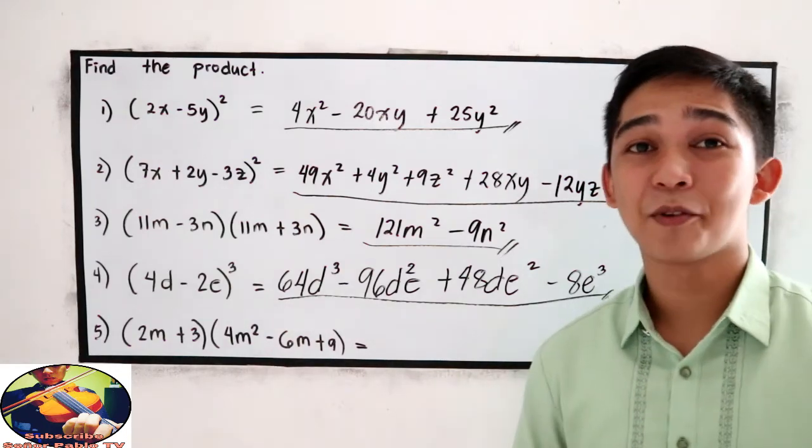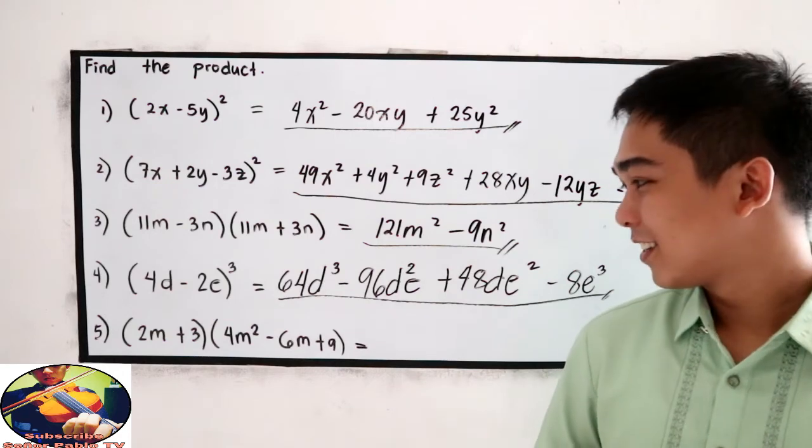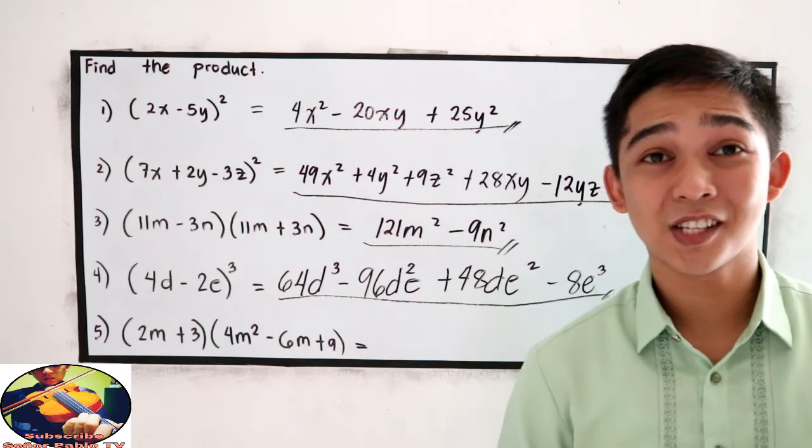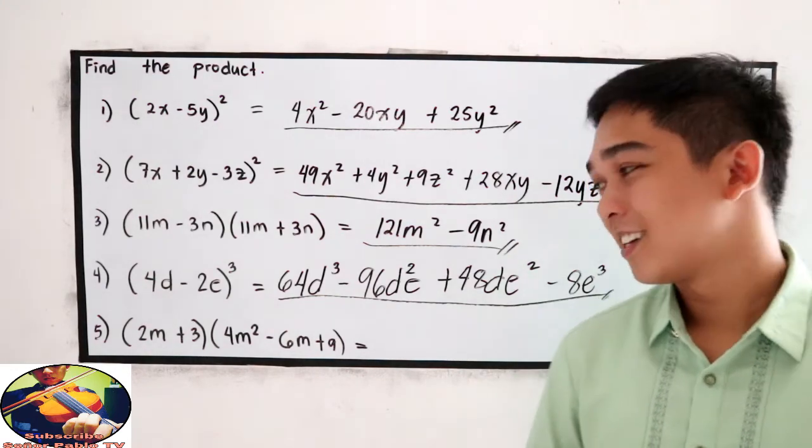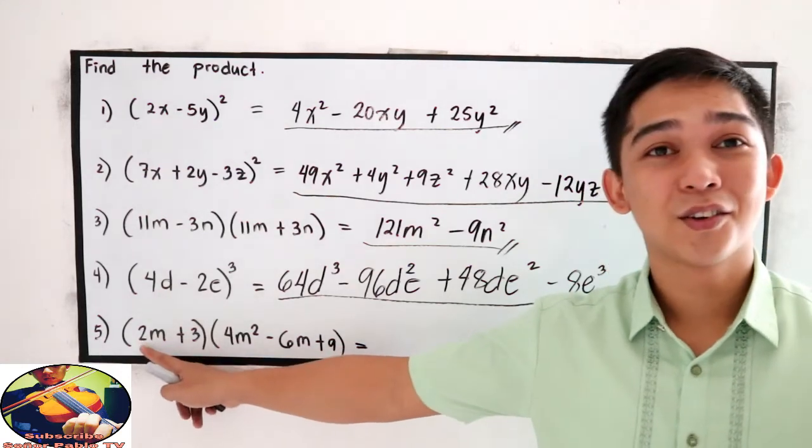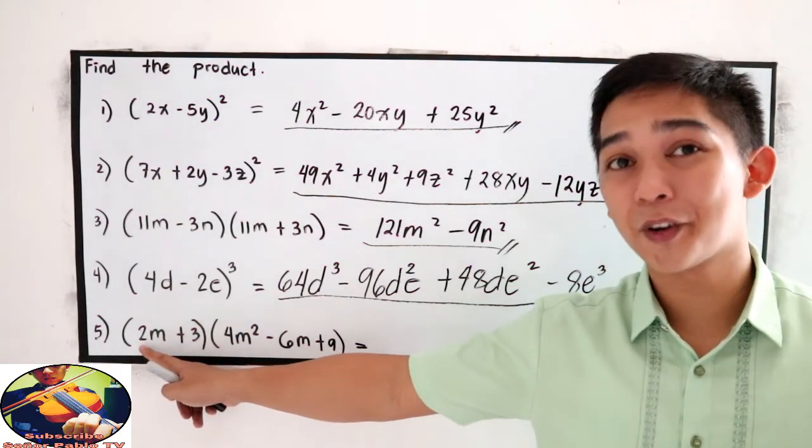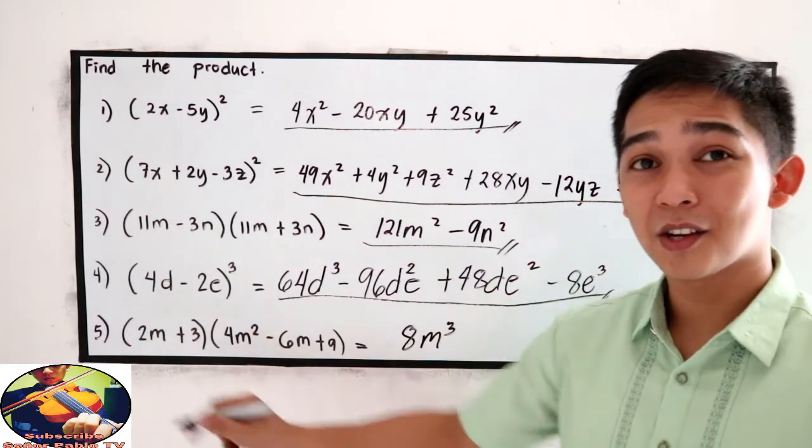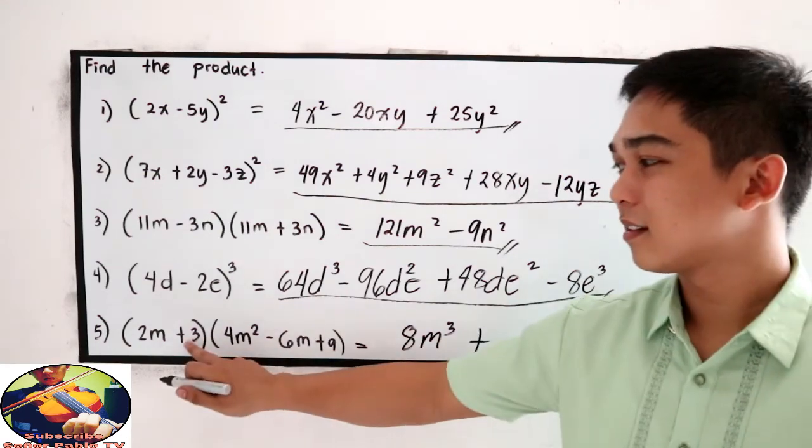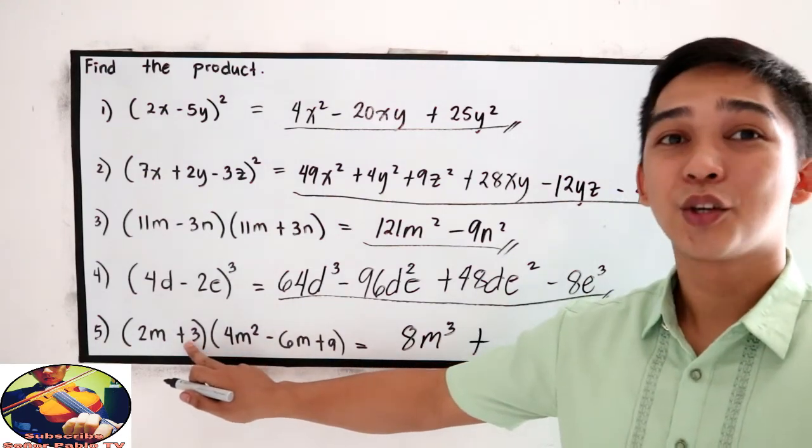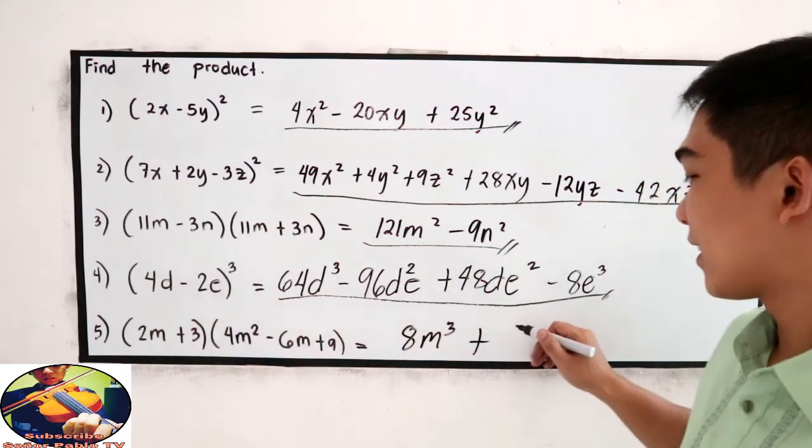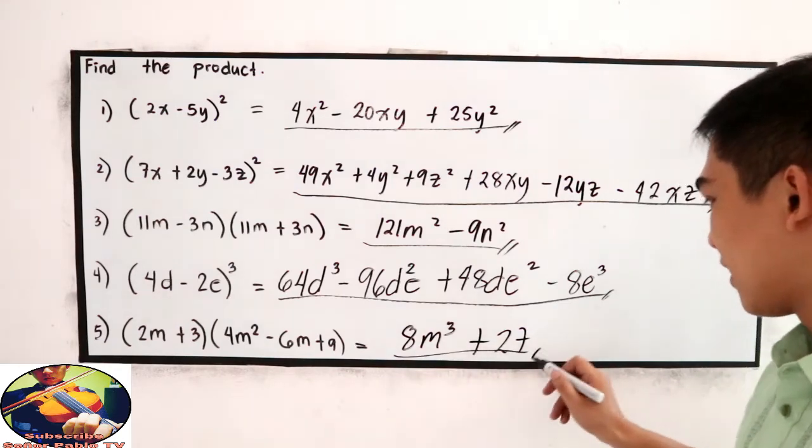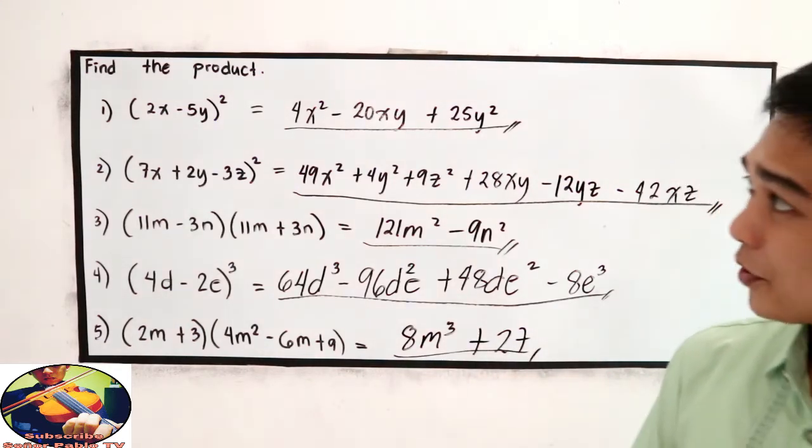And last, number 5. The product of the sum and difference of the cubes. So our shortcut is cube the first term. That is 8m cubed. Copy the sign of the middle term. Plus. Then cube the second term. 3 times 3 times 3. 27. So this is our shortcut for these special products.